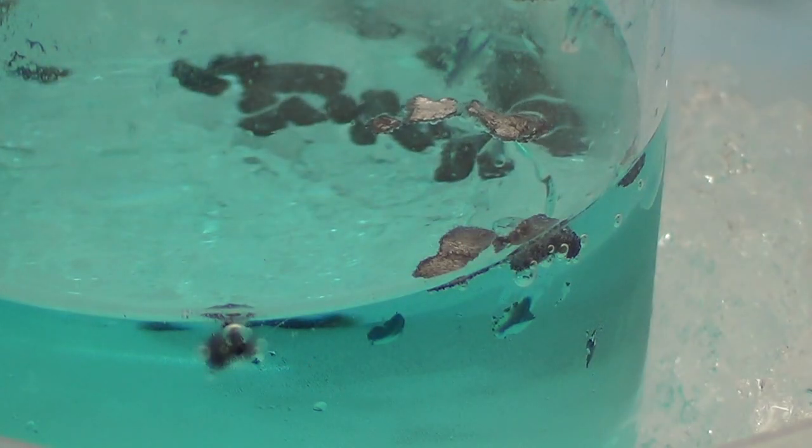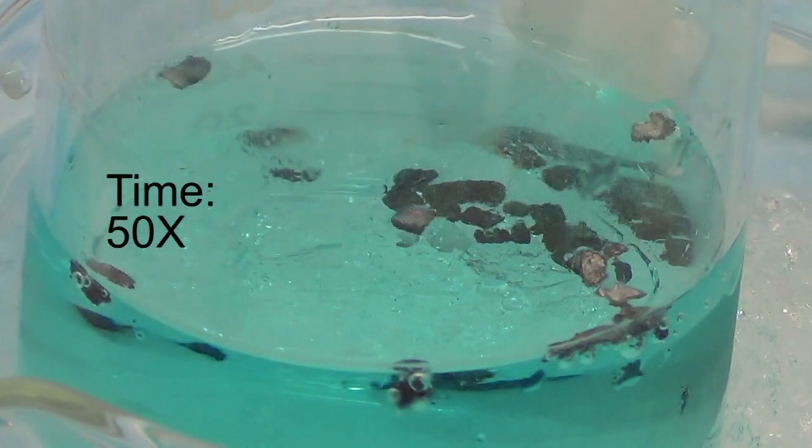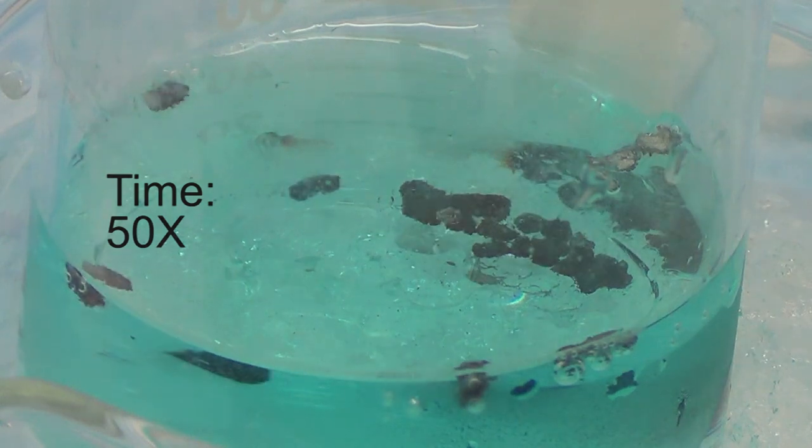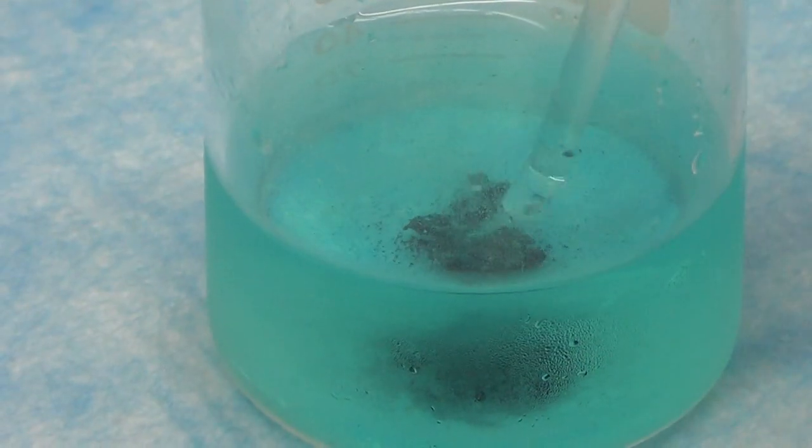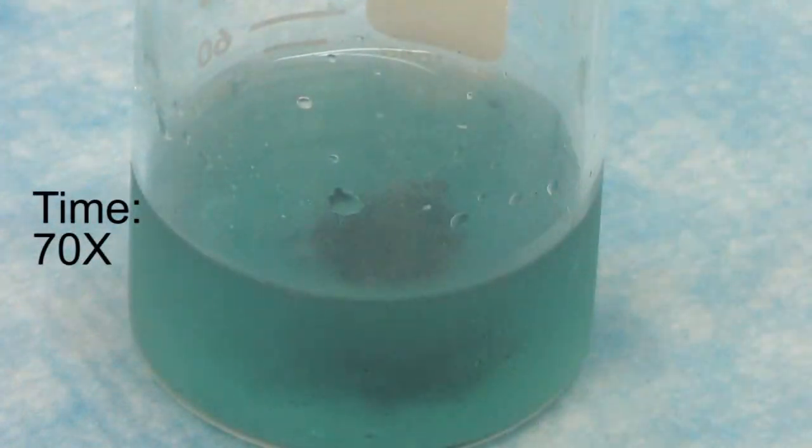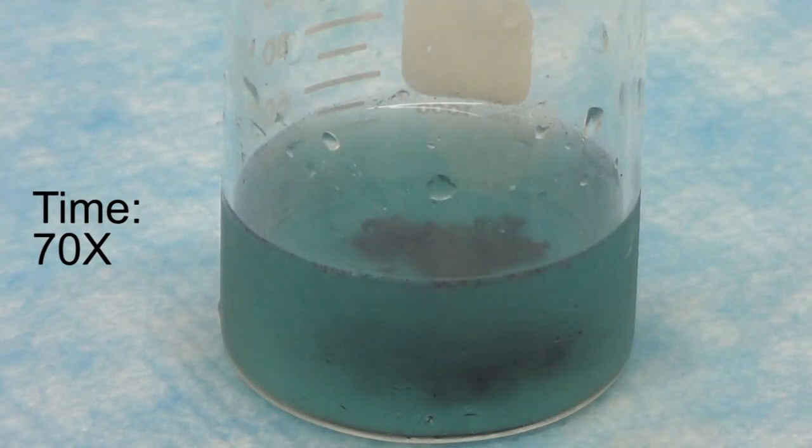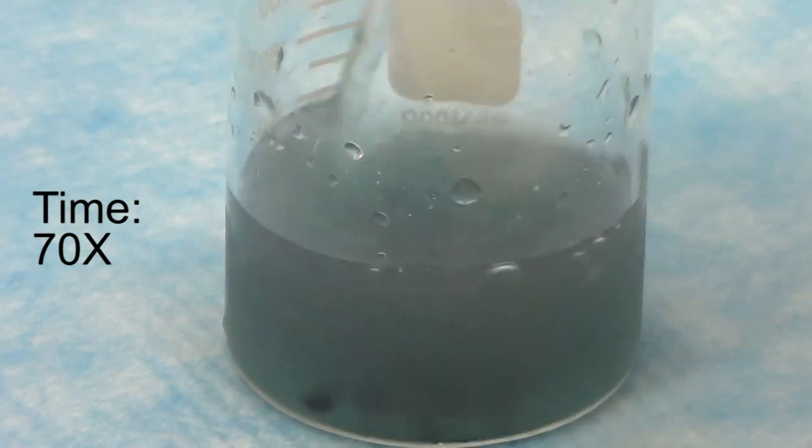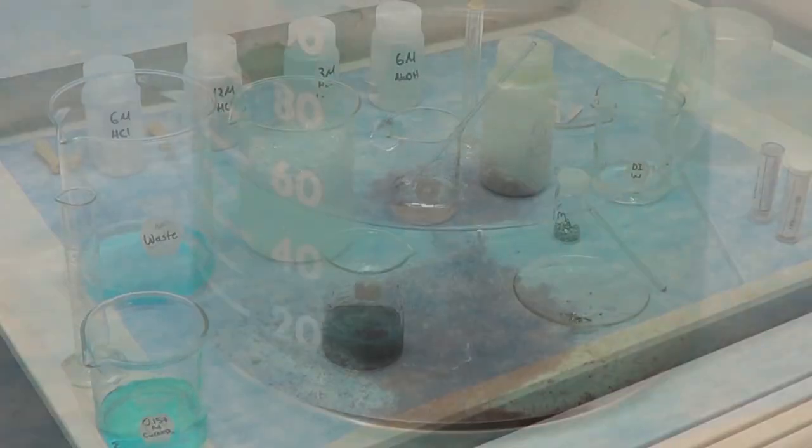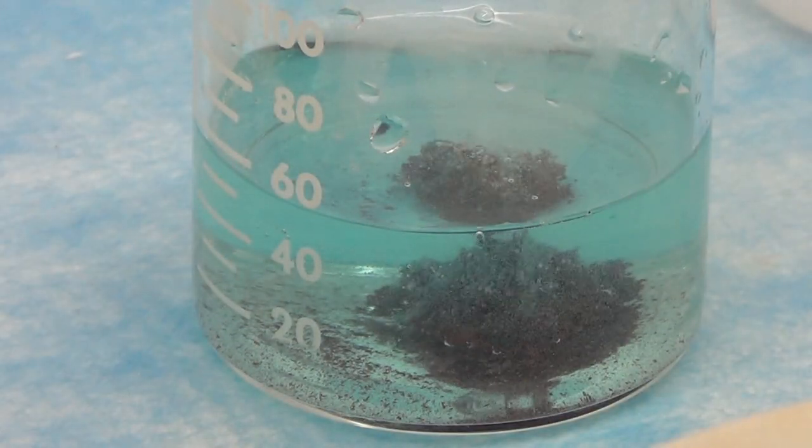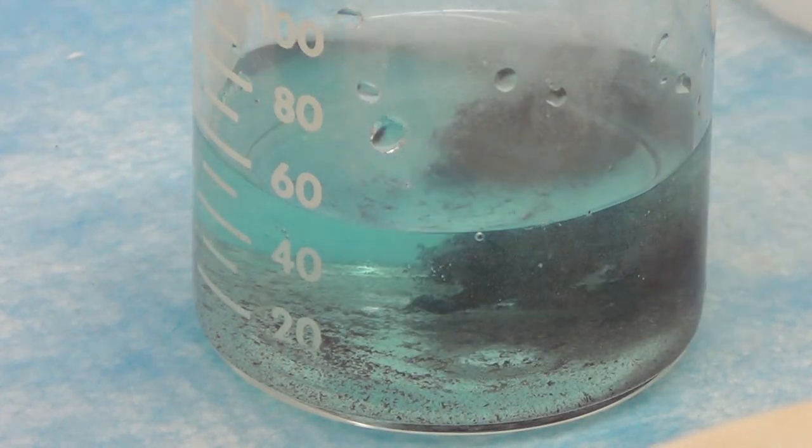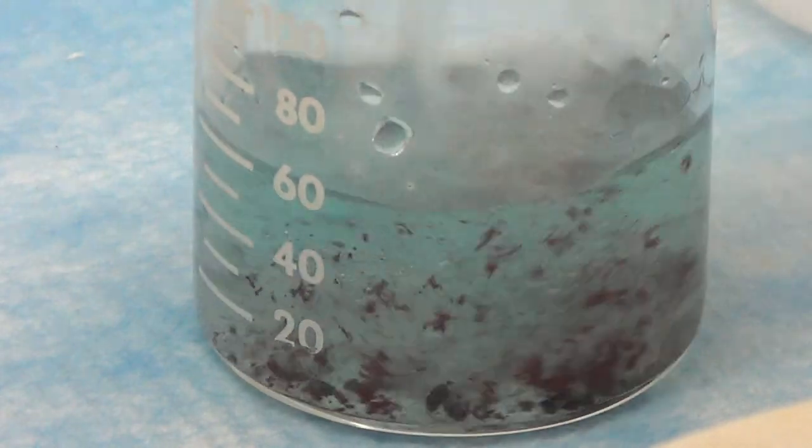This is also an example of oxidation reduction reaction which involves the change in the oxidation number. This is a slow process. To increase the rate of the reaction, we removed it from the ice bath and continuously stirred the solution. The bubbling is due to the magnesium reducing the proton to hydrogen gas.